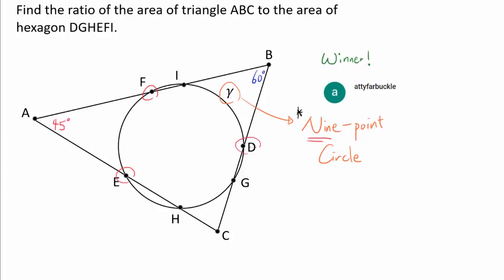So in this video, we are going to assume one property of the 9-point circle, which is that I, G, and H are actually the feet of the altitudes.